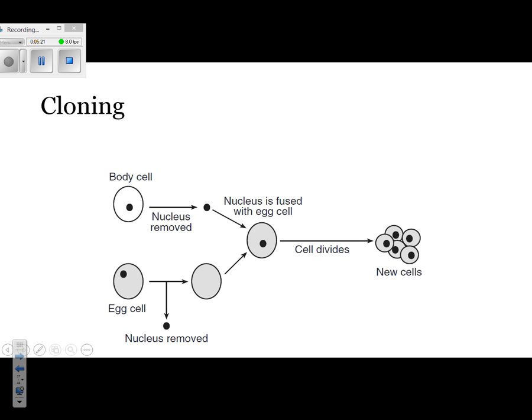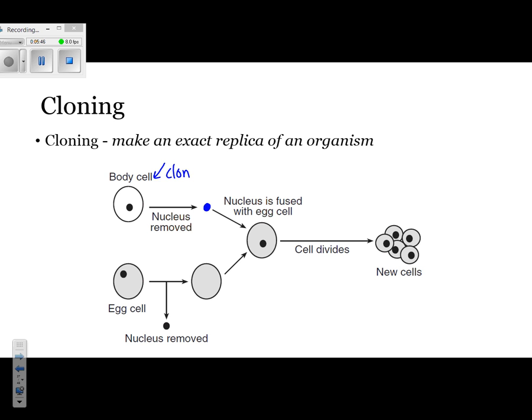The next thing we have is cloning. Cloning is when you make an identical copy or an exact replica of an organism. What you need to do is get a body cell and remove the nucleus. We're going to follow this nucleus as it moves through the diagram. Whoever donates the nucleus, that's who you're making a clone of — in this case, you're making a clone of the body cell.